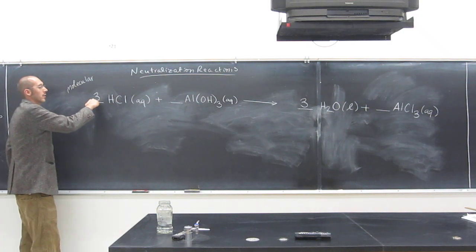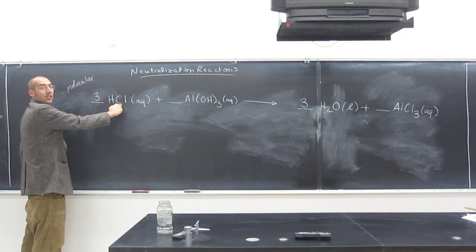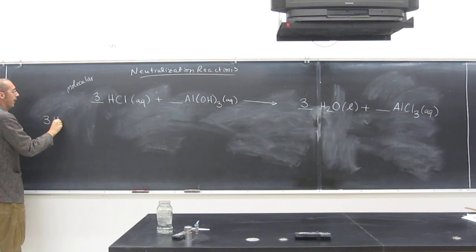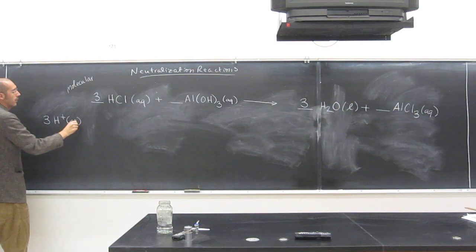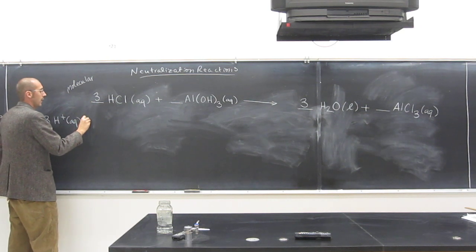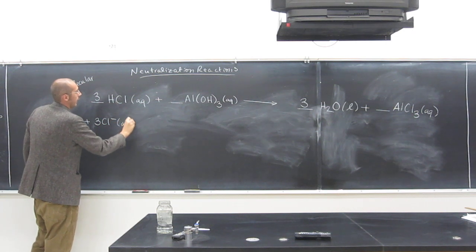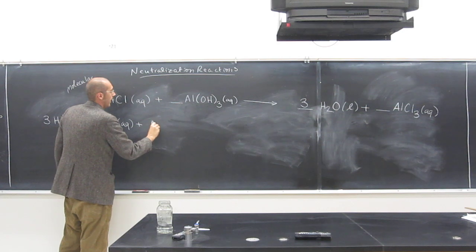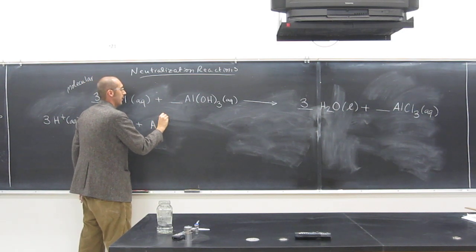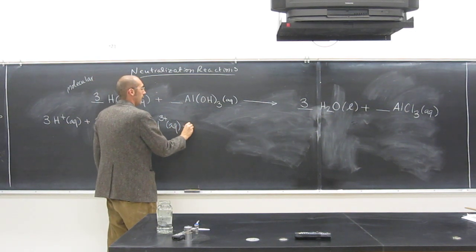So remember this coefficient is associated with both the H and the Cl. So we're going to have 3 H+ aqueous, and remember, if it's an ion, it's dissolved into water. In this class, 3 Cl minus aqueous, plus Al, what's the charge?